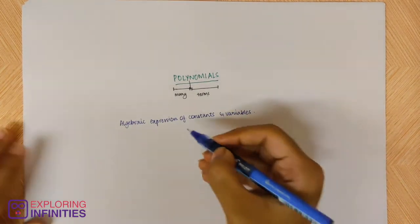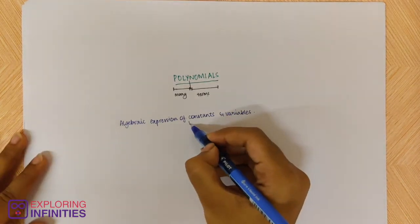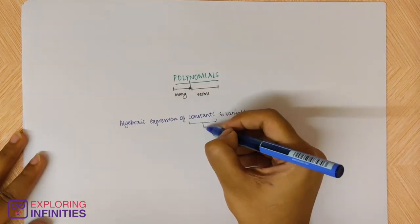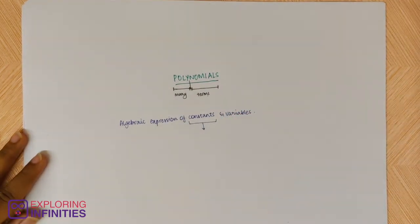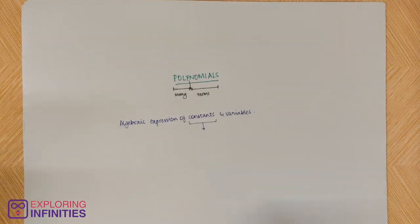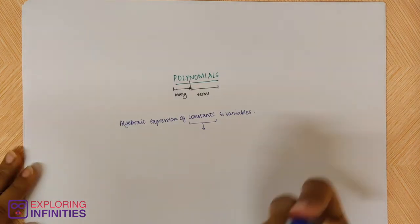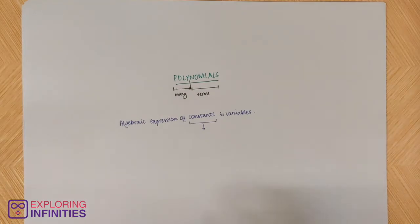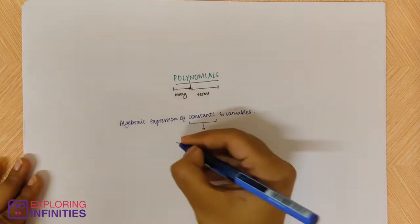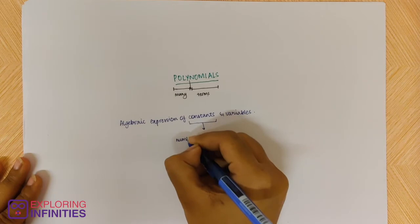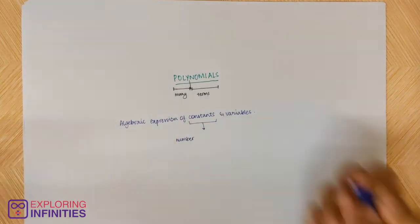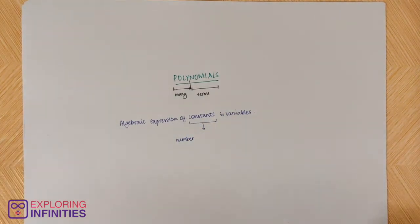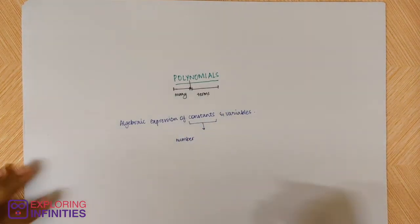So now, what are constants? Constants are expressions or numbers that can be defined. Something in an equation — if you can define it, you would call it a constant. Defined means that it has a predetermined value. A number, for example, can be a real number, or a rational number or anything of that sort.